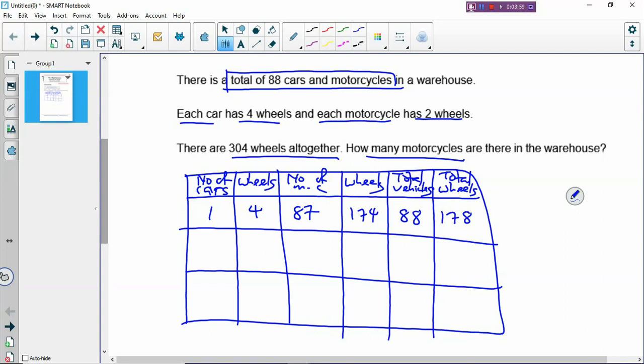Now in the second row it's also very easy to fill in the boxes. If you start with one car, then you continue with two cars. If there are two cars, that will be 4 times 2, 8 wheels. And there must be 86 motorcycles. So 86 times 2, that will give you 172 motorcycle wheels. The total number of wheels add together will be 180 wheels. And the total vehicles will be still 88.